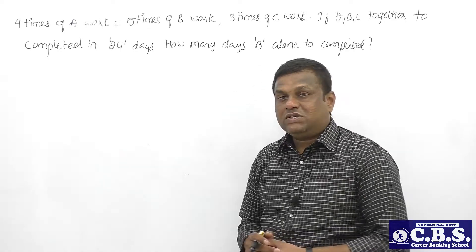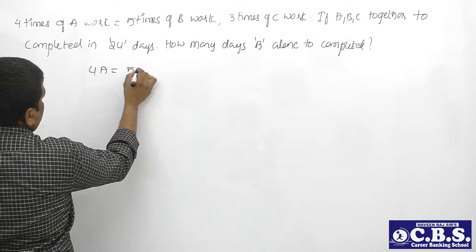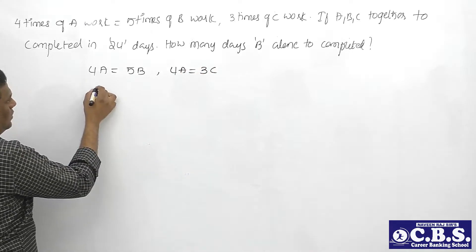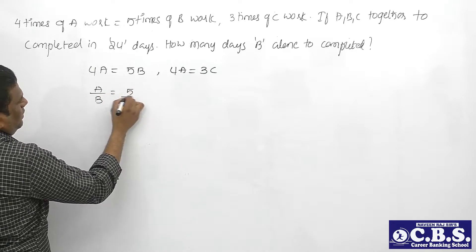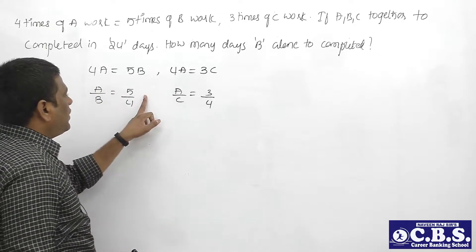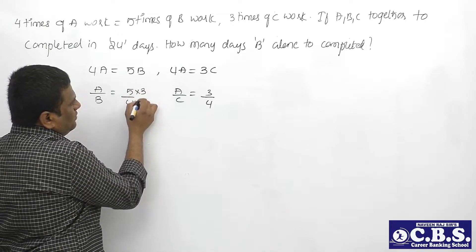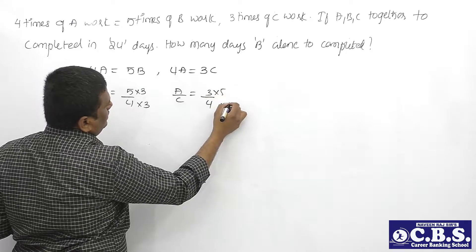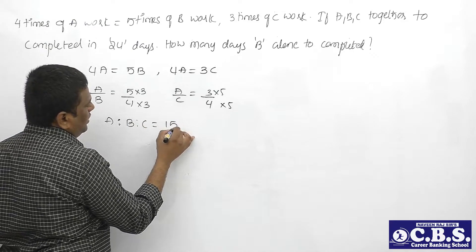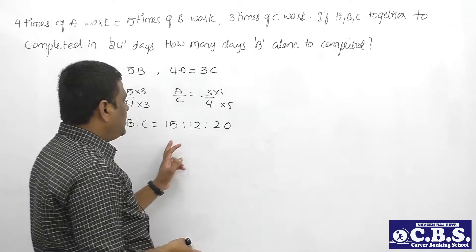Here the question gives a comparison or ratio between A, B, and C's work - which applies to efficiency. From the given conditions: 4A = 5B gives A/B = 5/4, and 4A = 3C gives A/C = 3/4. To equalize A's value across both ratios: A is 5 in the first and 3 in the second, so multiply accordingly - by 3 and by 5 respectively. Therefore, the efficiency ratio A : B : C = 15 : 12 : 20.